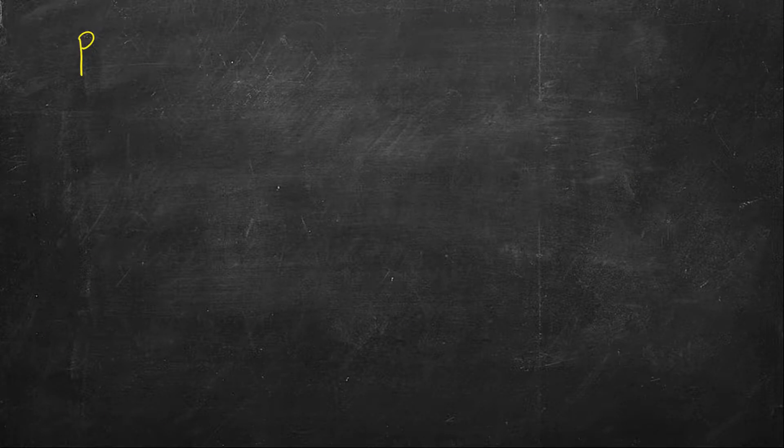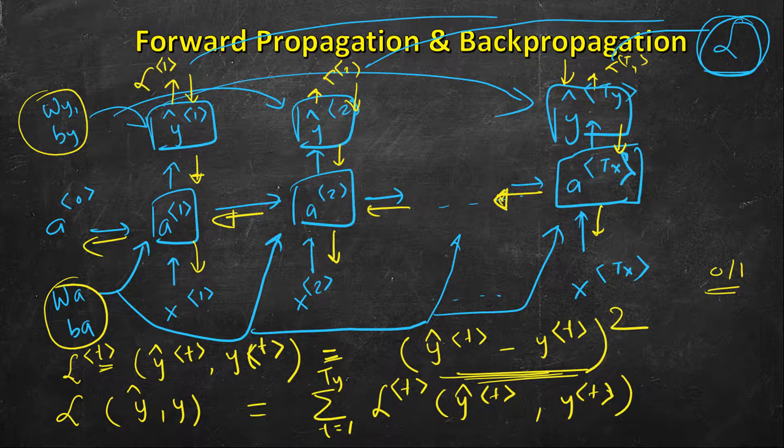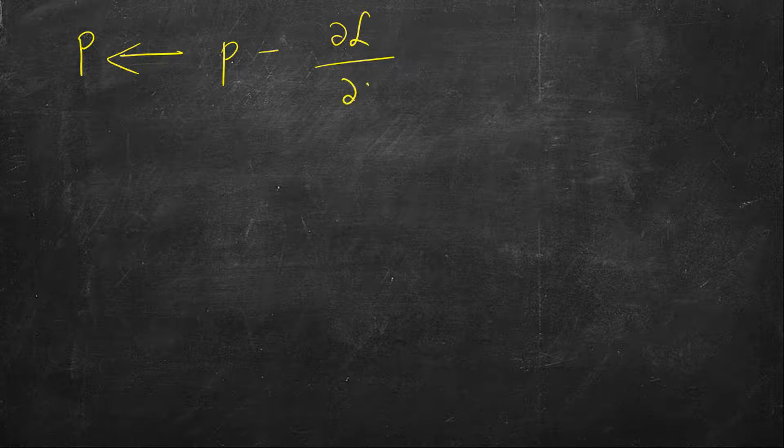If you remember the gradient descent, we have a generic parameter—this will cover all the parameters w_a, b_a, w_y, b_y. Parameter p is updated as p minus α times dL/dp, the derivative of loss with respect to this parameter. This is how we will update it using gradient descent.